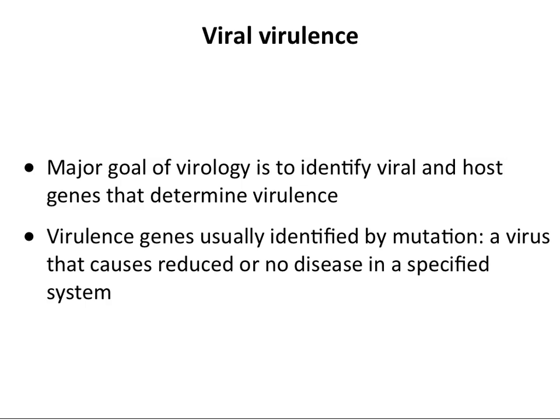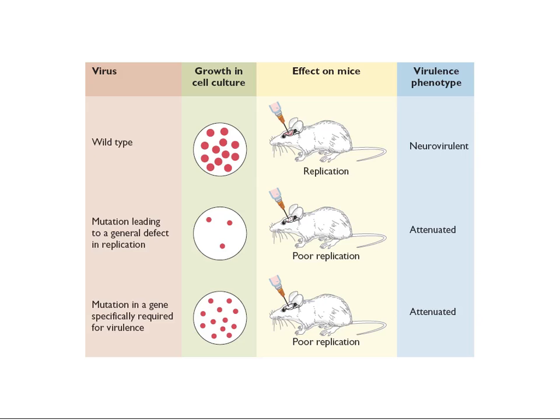Why do we study virulence? The goal is to identify genes of both the virus and the host that control it, because if we can do that we might be able to design interventions to prevent viruses from causing disease. The way we identify genes is by making mutations — in the viral gene or in the cellular gene — and seeing if we can make viruses with reduced or no virulence.